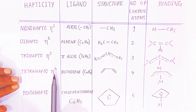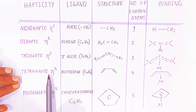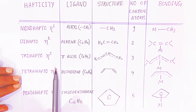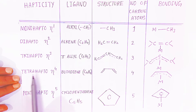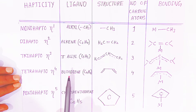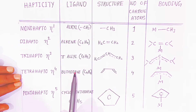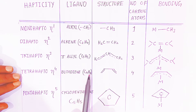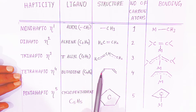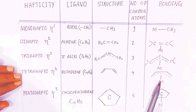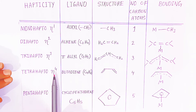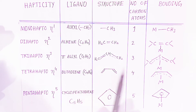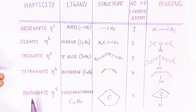The fourth type is the tetra hapto ligand, where eta raised to four indicates four carbon atoms bonded to the metal. The well-known example is butadiene, with formula C₄H₆. In butadiene, all four carbon atoms are involved in bonding with the metal, which is why it is called a tetra hapto ligand.